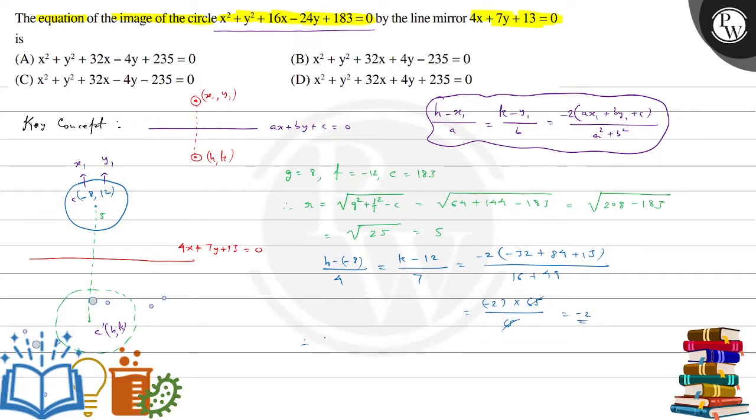And therefore, yaha se milta hai, h equals, h plus 8 by 4 is minus 2. So, h plus 8 will be minus 8, so h will be minus 8 minus 8, that is minus 16.